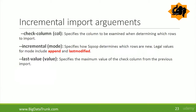With the Sqoop incremental import command, you need to provide three arguments: check column, incremental mode, and last value. The check column specifies the column name that will be examined when determining which rows to import. The incremental argument specifies the mode, which can be append or last modified — this determines how Sqoop identifies which rows are new. The last value argument specifies the maximum value of the check column from the previous import.